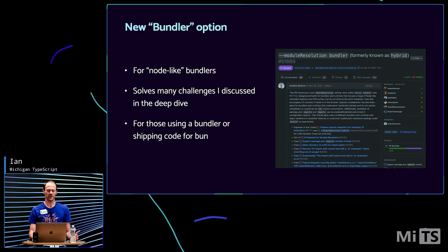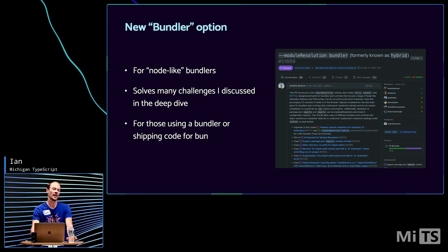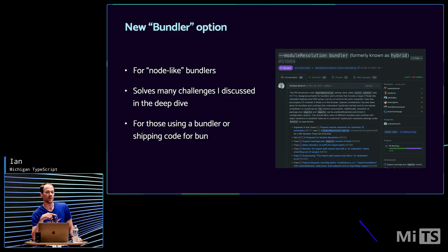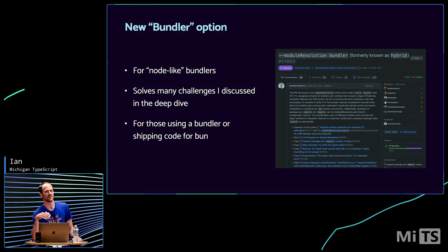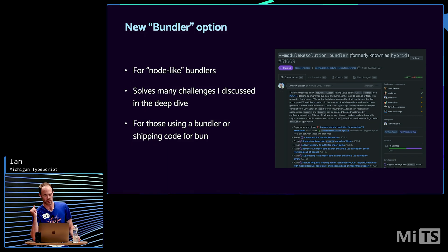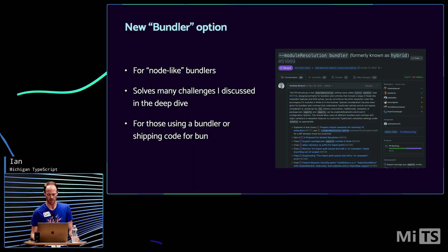One thing to note is it really is for people who are using a bundler — Webpack, Vite, Parcel, Rollup, something like that. Or if you're shipping code directly to Bun. Bun is a runtime, sort of similar to Deno and Node, but it works a little differently — it kind of behaves a little bit like a bundler. So if you're writing code that's going to get shipped straight to Bun, you can use this bundler option.